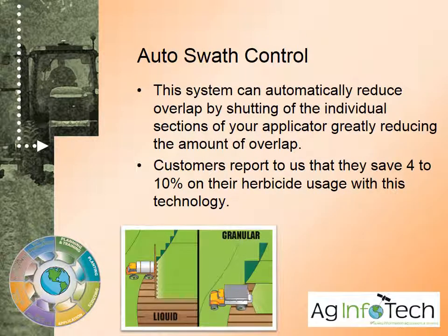Auto swath control can be accomplished with the same controllers that are controlling the variable rate. These systems automatically reduce overlap by shutting off the individual sections of your applicator, thus greatly reducing the amount of overlap that you have. Customers report to us that they save 4 to 10 percent on their herbicide usage with this technology.